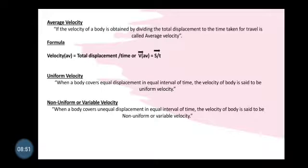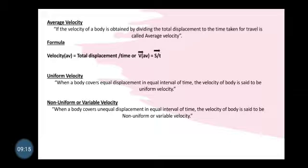Uniform velocity: when a body covers equal displacement in equal intervals of time, the velocity of the body is said to be uniform — just like in speed, but here displacement is in a particular direction. Non-uniform and variable velocity: when a body covers unequal displacement in equal intervals of time, the velocity of the body is said to be non-uniform or variable velocity.